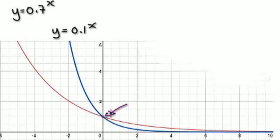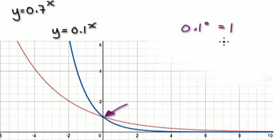The important thing is that this point here is 1, because 0.1 to the power of 0 is 1, and 0.7 to the power of 0 is also 1.